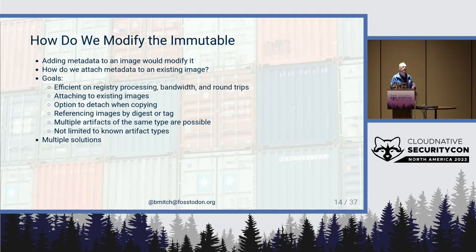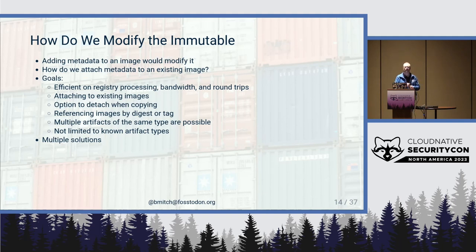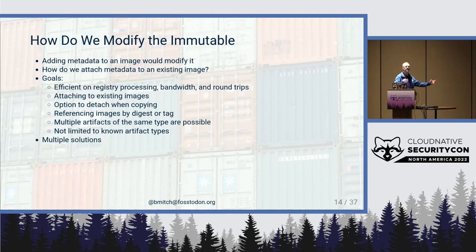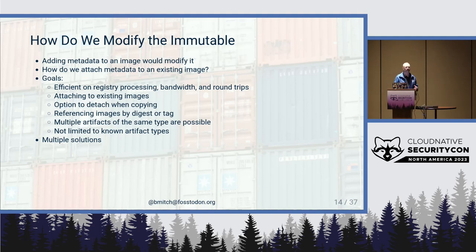A working group was spun up with requirements. We looked at efficiency — not making a lot of extra API calls. Other challenges included how to attach and detach content: if you bring an upstream image in-house, you might want to add your own signature and skip the upstream one. Or you might need to add extra metadata that wasn't there. We also couldn't predict everything people would include — you could attach cat pictures if you wanted, and we didn't want to write a spec for that.